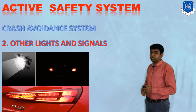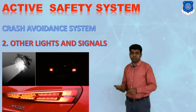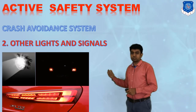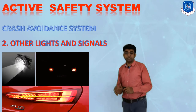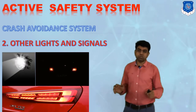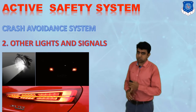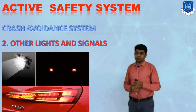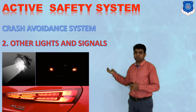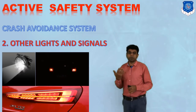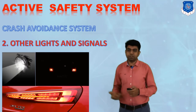The second system is other lights and signals — for example, turn signals, parking brake lights, and fog lamps. While fog lamps are not categorized under mandatory requirements, they come under the crash avoidance system. If they are working properly, you can eliminate a significant number of accidents.